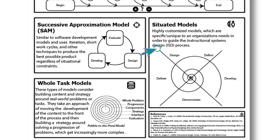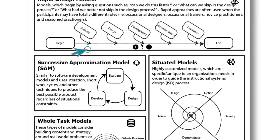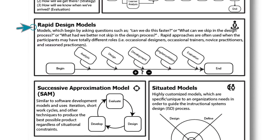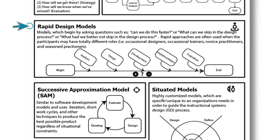Here we see one example of what a situated model of instructional design might look like. At the same time this situated approach was taking place, designers were finding that the rigidness of early models did not allow for a timely implementation of instruction. Designers also recognized that for some projects, not all steps — or not all parts of the steps — of the ID process were necessary. For these reasons, designers called for a more rapid approach to the design process, and so emerged rapid models of ID.